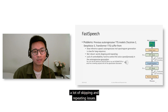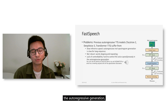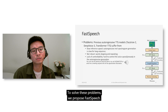The third issue is lack of controllability. It is hard to control the voice speed and prosody in autoregressive generation because frames are generated one by one automatically. To solve these problems, we propose FastSpeech.